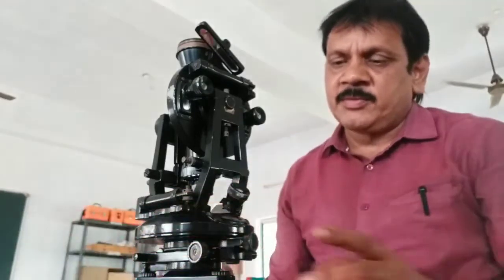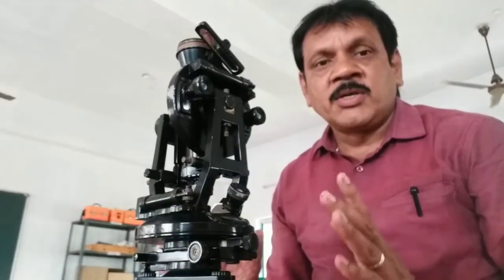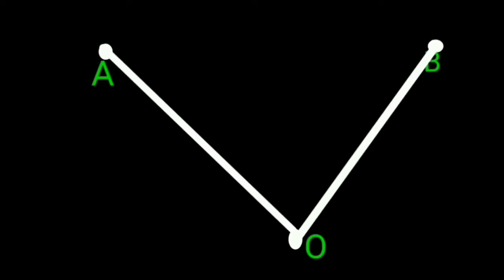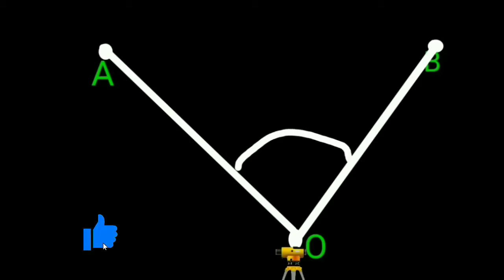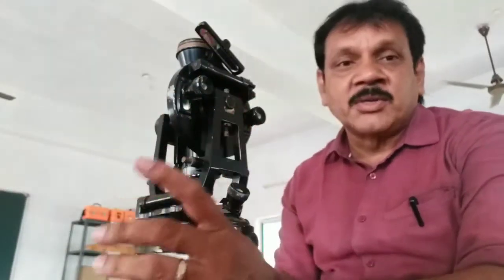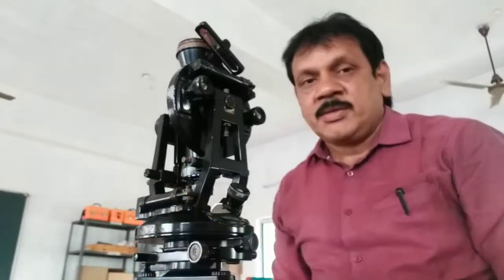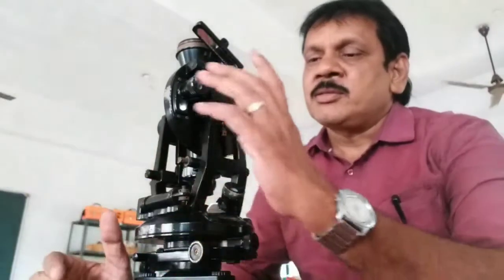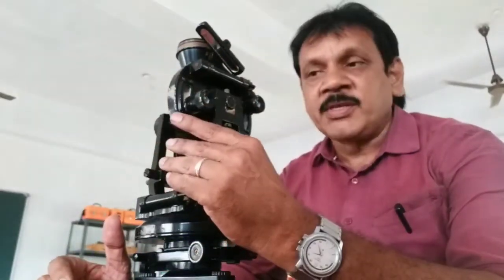Coming to the repetition method first: if you want to measure the horizontal angle between two points — point A, point B, and point O — the horizontal angle AOB can be measured using the theodolite. The temporary adjustments are to be made and the instrument is set up at point O, kept in the face left position.